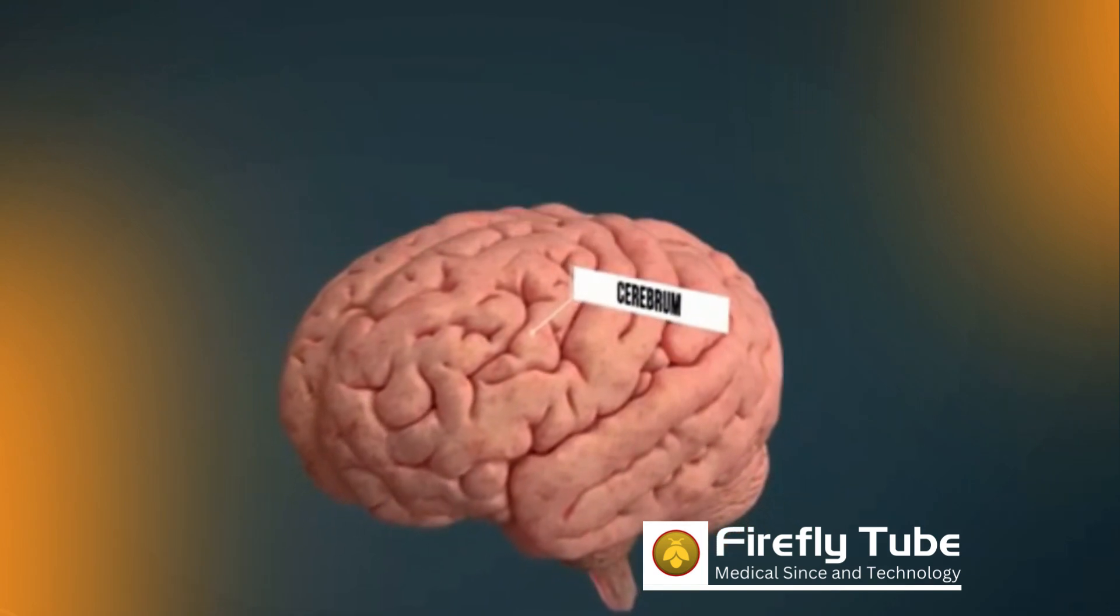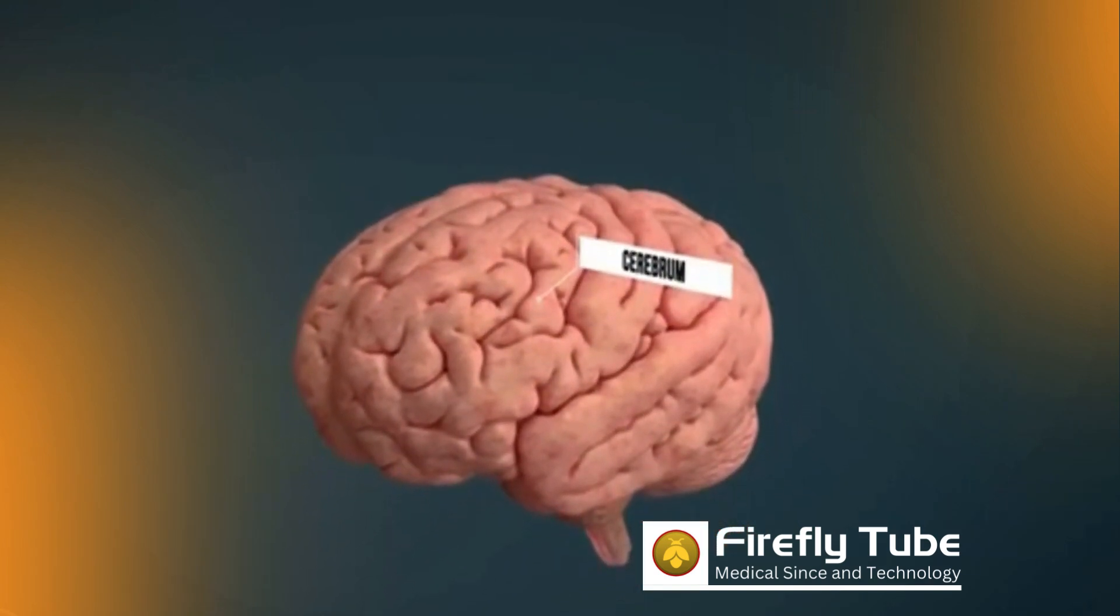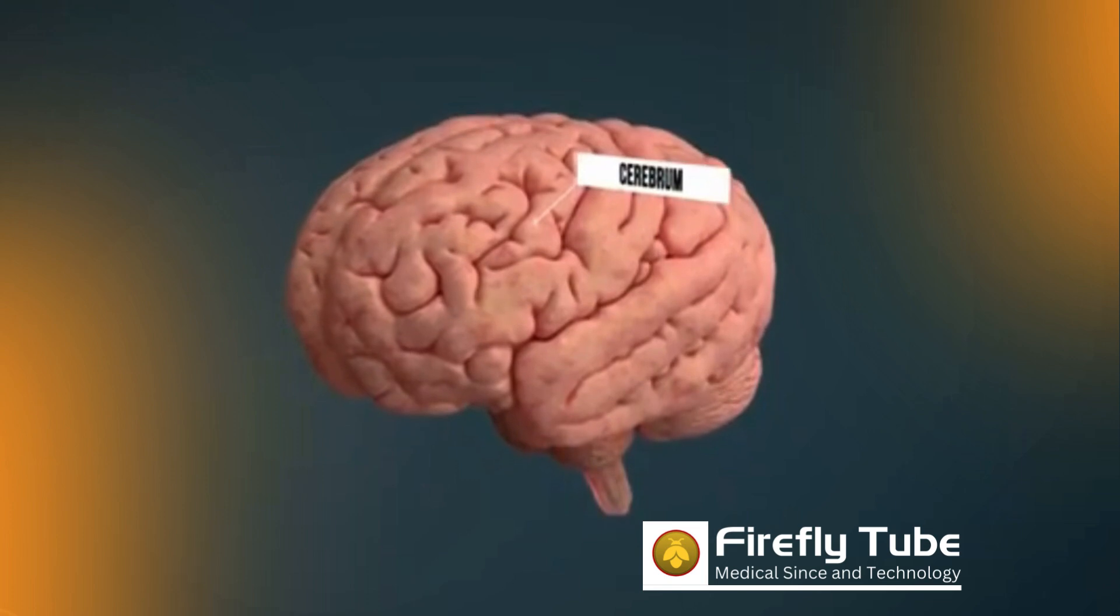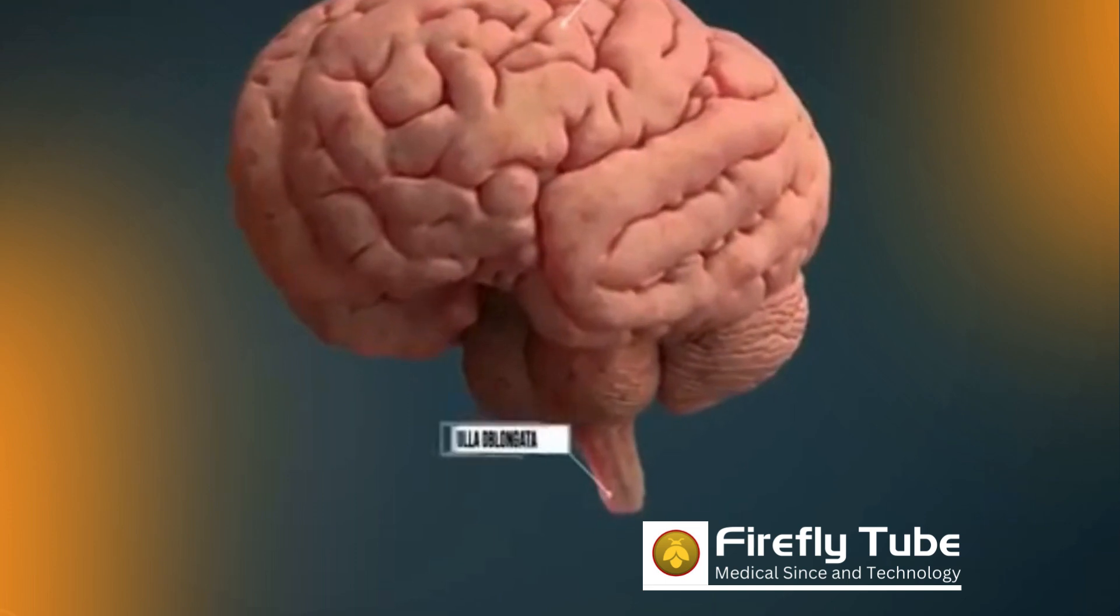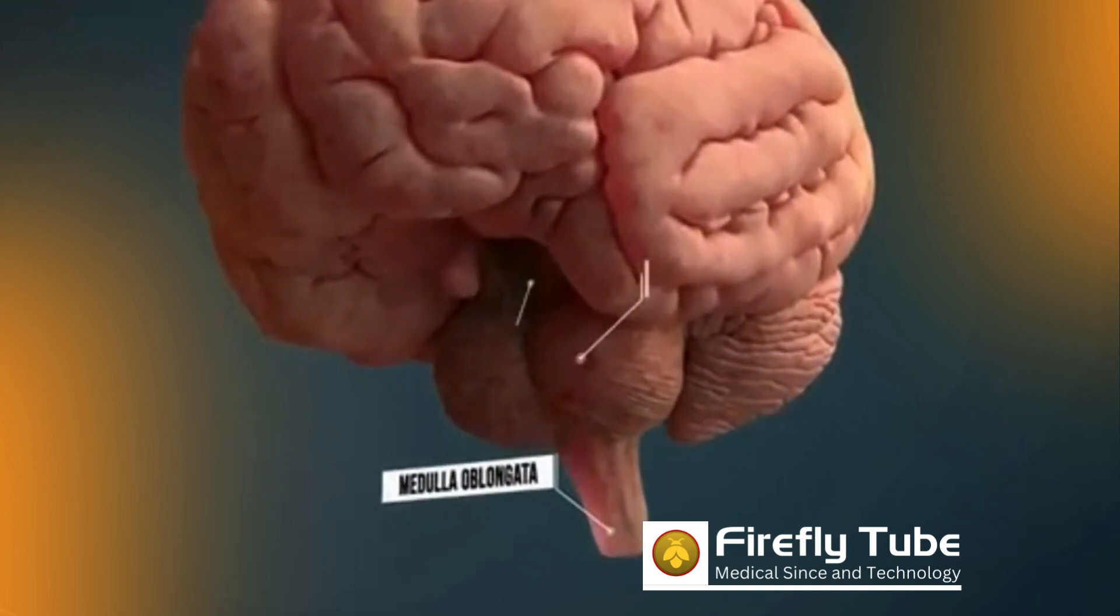Let's take a look at the general design of our brain. The brain is generally divided into different parts. The brain stem consists of three parts: the medulla oblongata, the pons, and the midbrain.